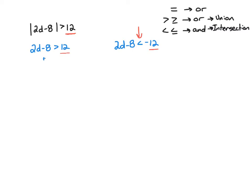I add 8 to both sides and get 2d is greater than 20. Divide by 2, d is greater than 10. For the other one, I add 8 to both sides, so 2d is less than negative 4. Divide by 2, d is less than negative 2.